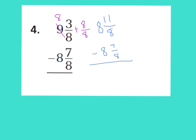Now I can subtract: 11 minus 7 is 4, keeping my denominator as 8. Then 8 wholes minus 8 wholes is 0 wholes. So my answer is 4 eighths, which is also the same as 1 half if you simplify it.